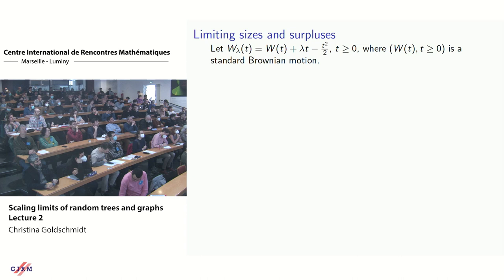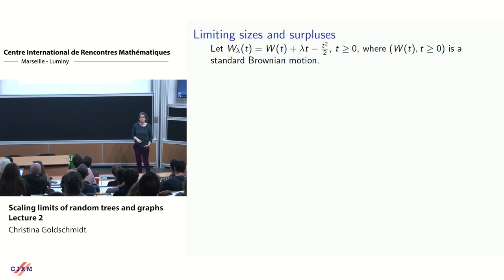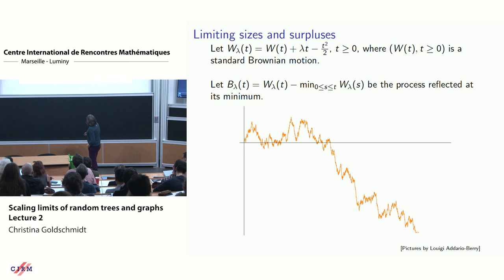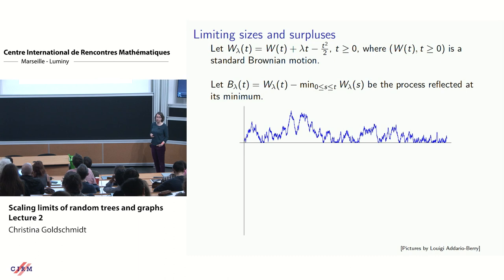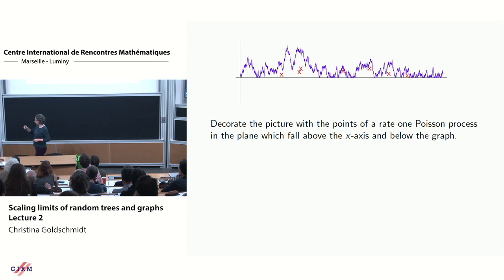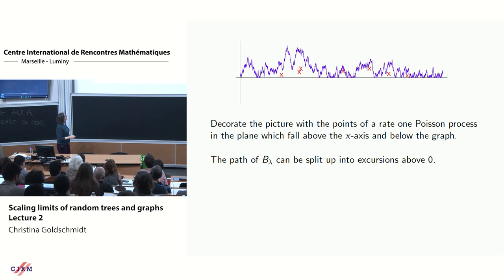The description of the limiting sequences is quite surprising. Start with a Brownian motion W given a parabolic drift: add λt − t²/2. This produces a Brownian motion wandering around a parabola. Then subtract off its running minimum, which picks the process up to stay above the x-axis, and decorate with points of a rate-1 Poisson process in the plane, keeping only those falling under the graph of this process and above the x-axis.